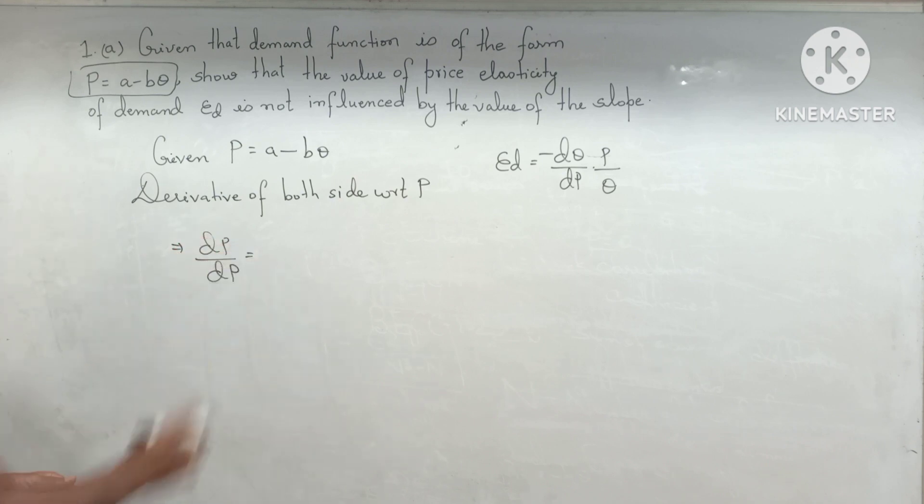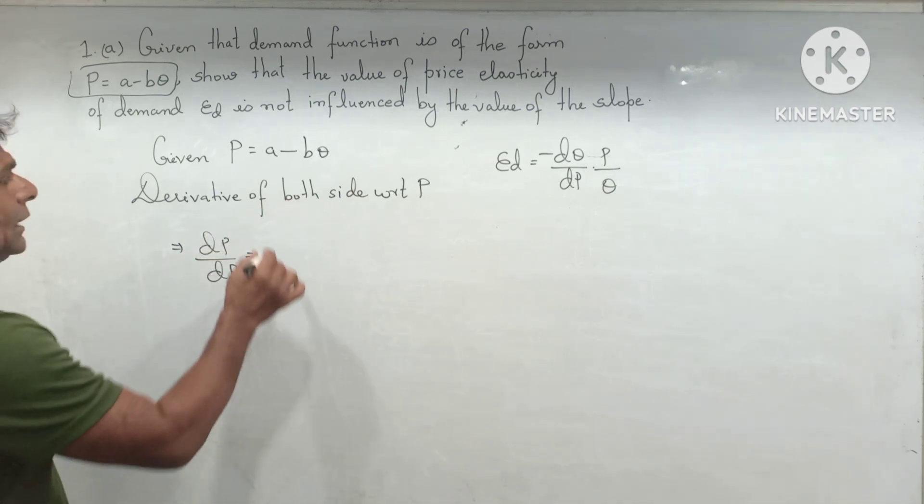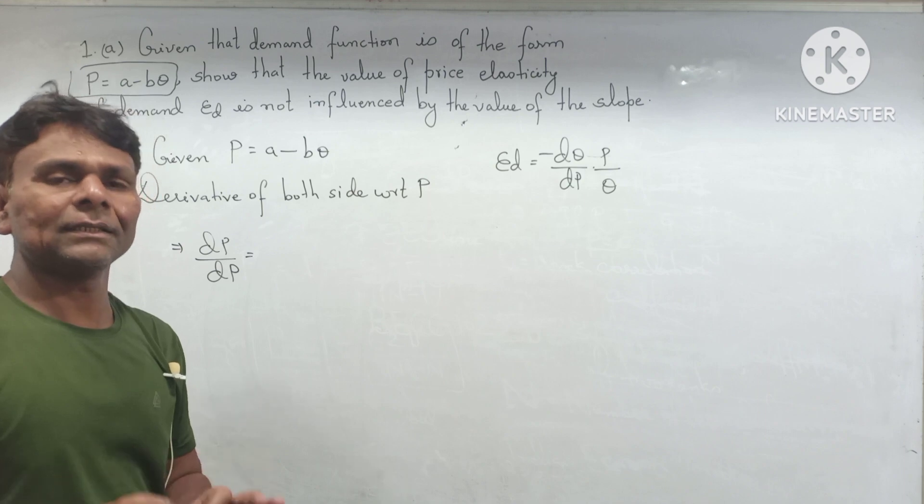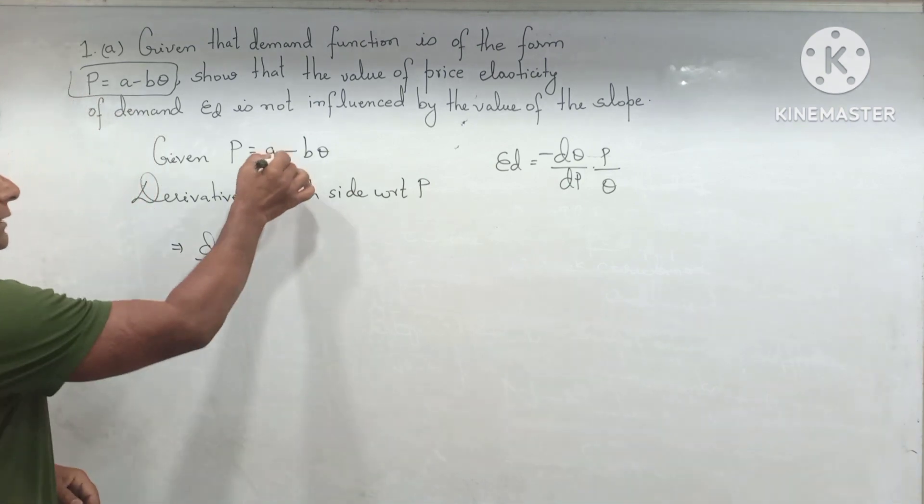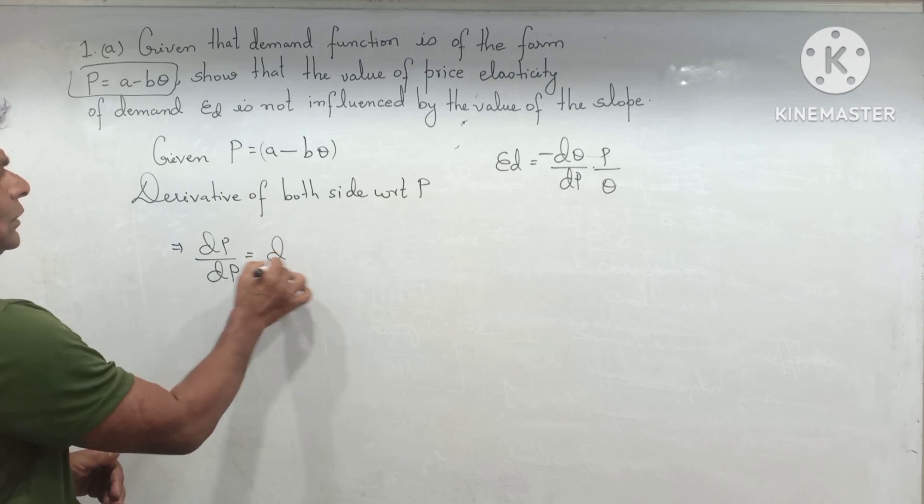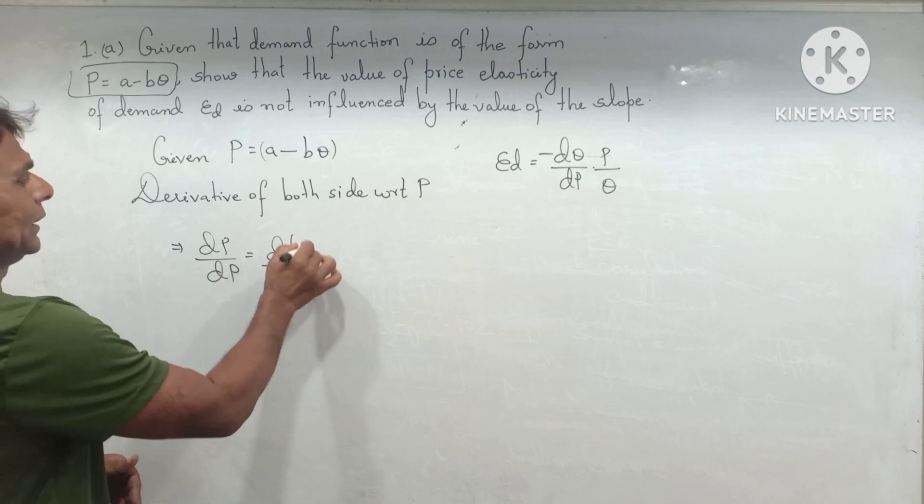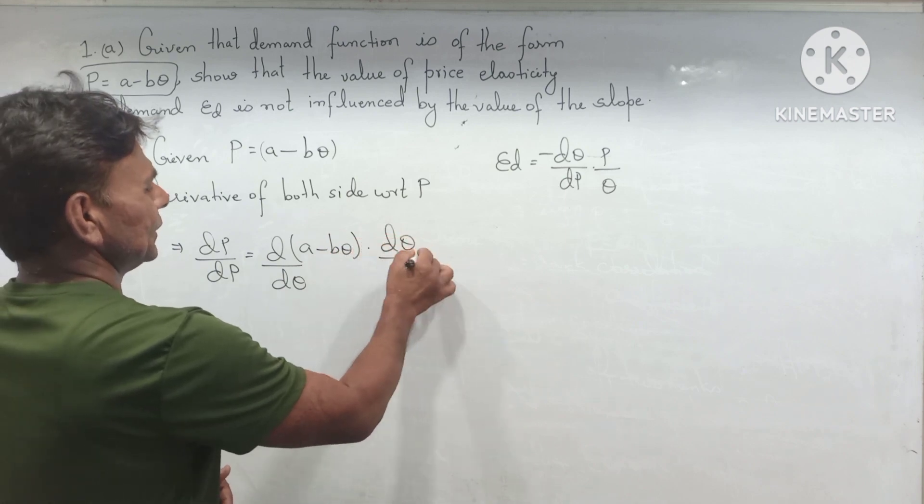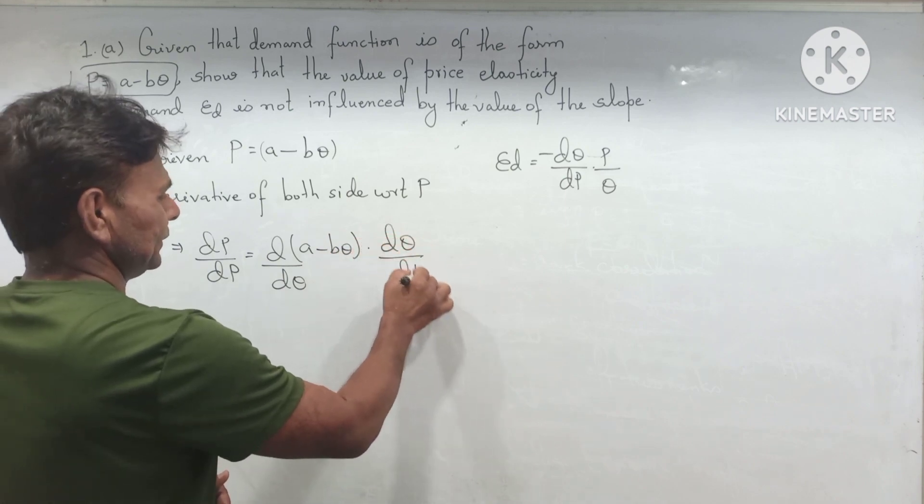We are taking the derivative of both sides with respect to P using the chain rule. First, taking the derivative of this expression with respect to Q: A - BQ, and again multiply by DQ/DP.